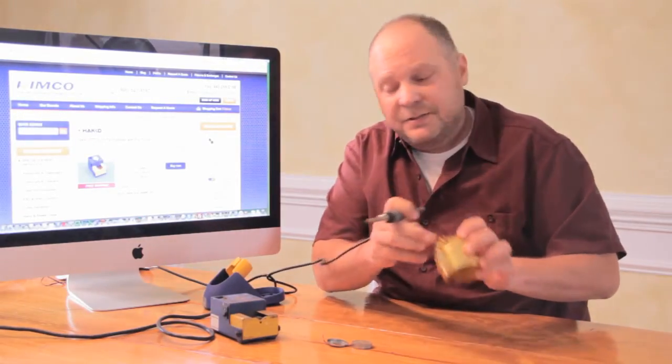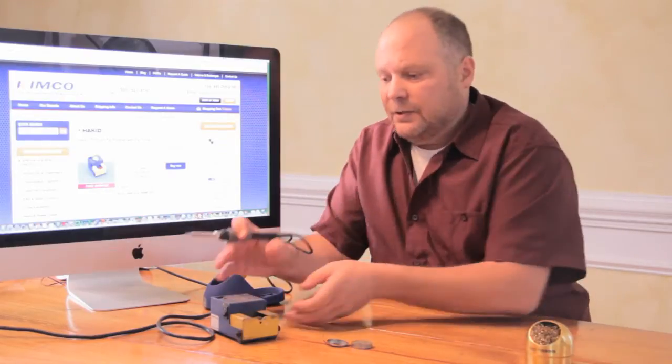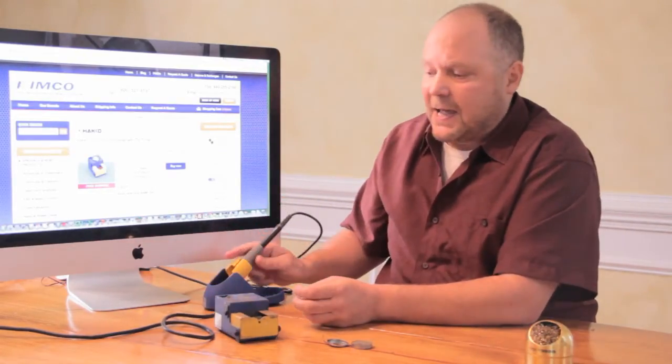This brass thing can be replaced if it gets overused. The other device you really should have, every shop should at least have one of these, and it's the Hakko FT700.